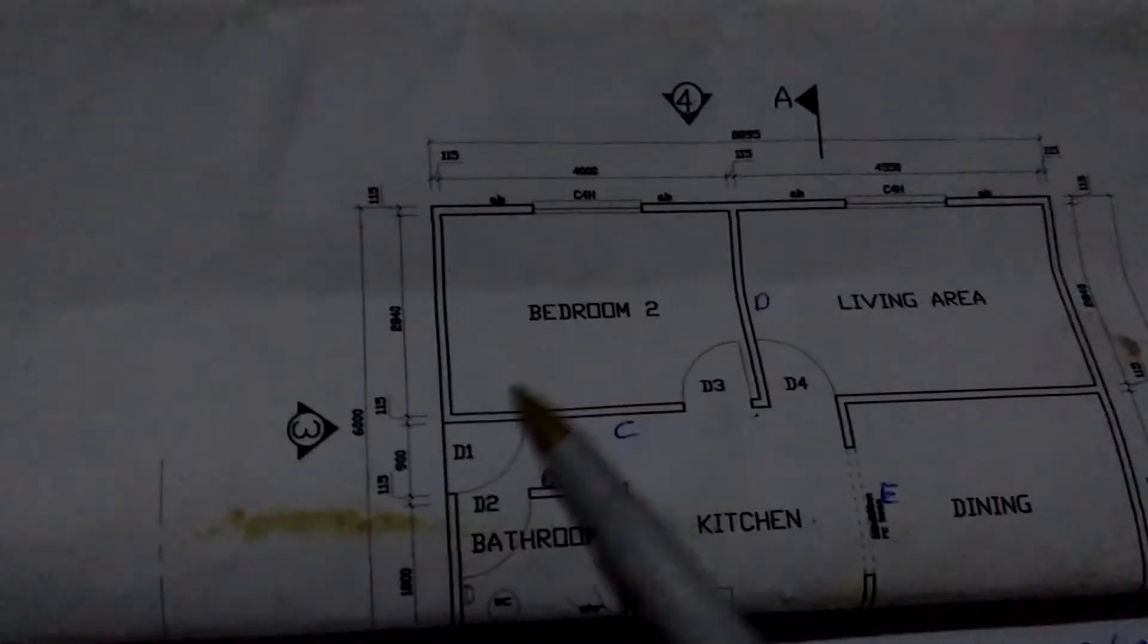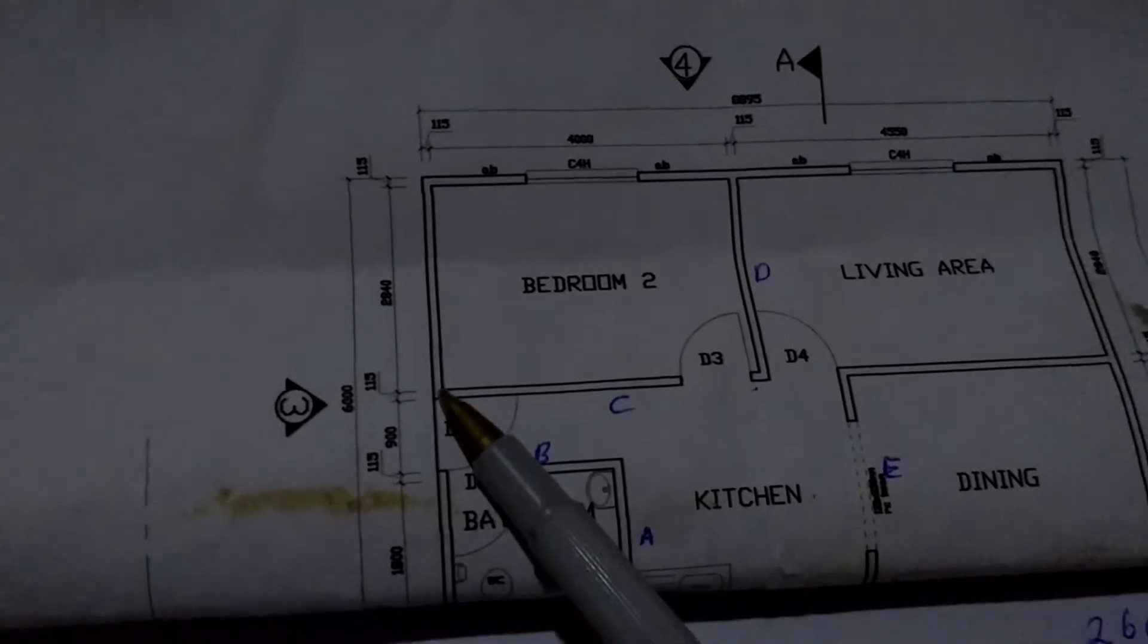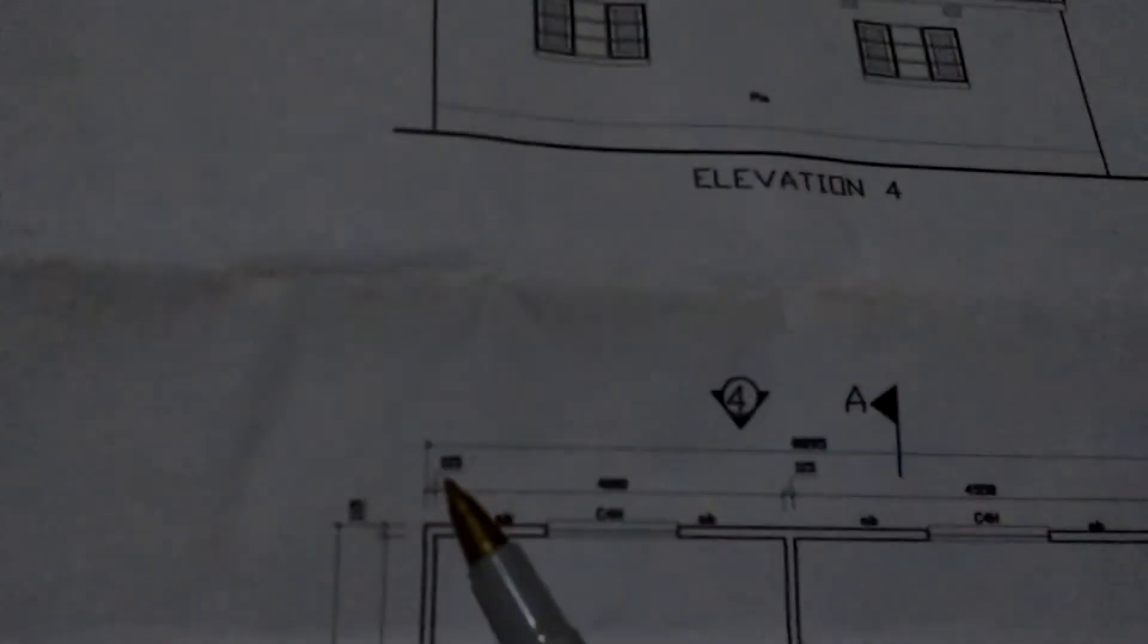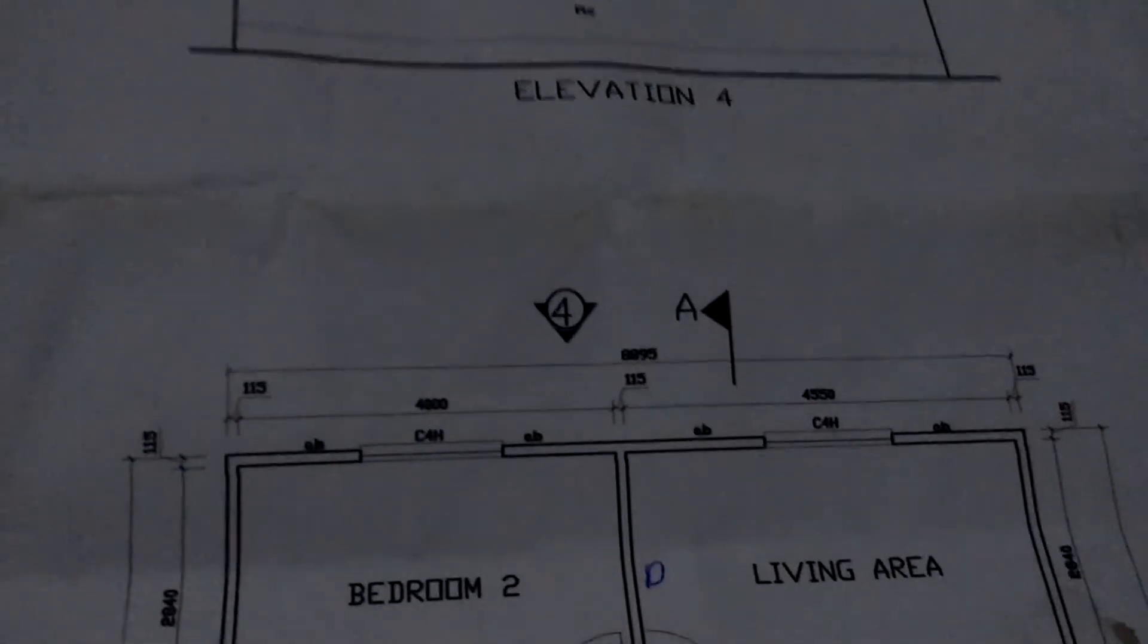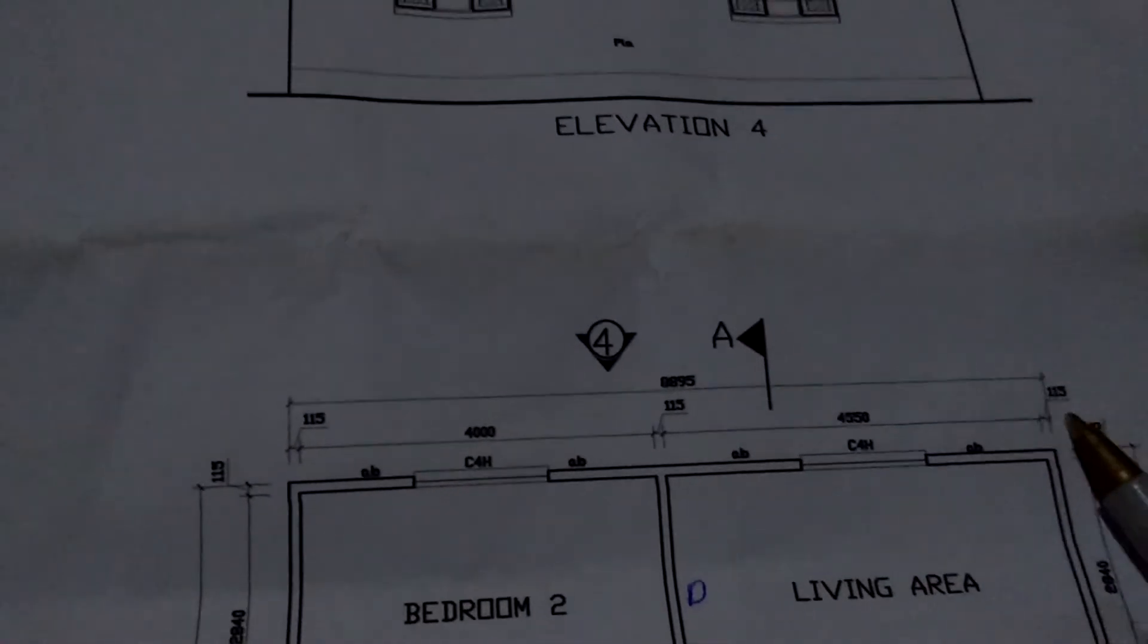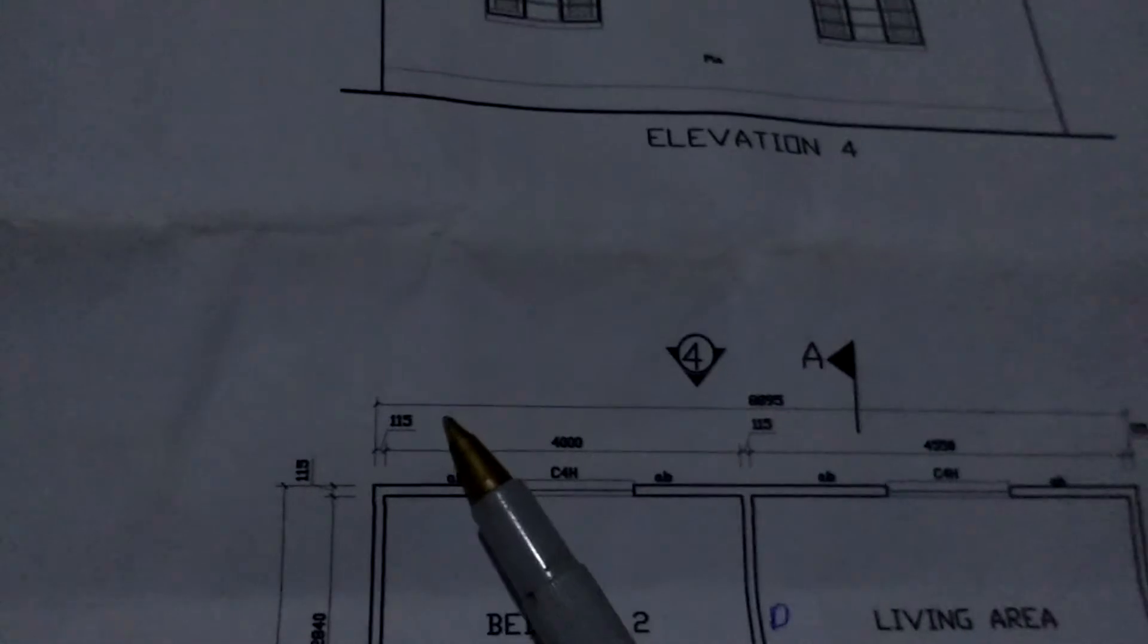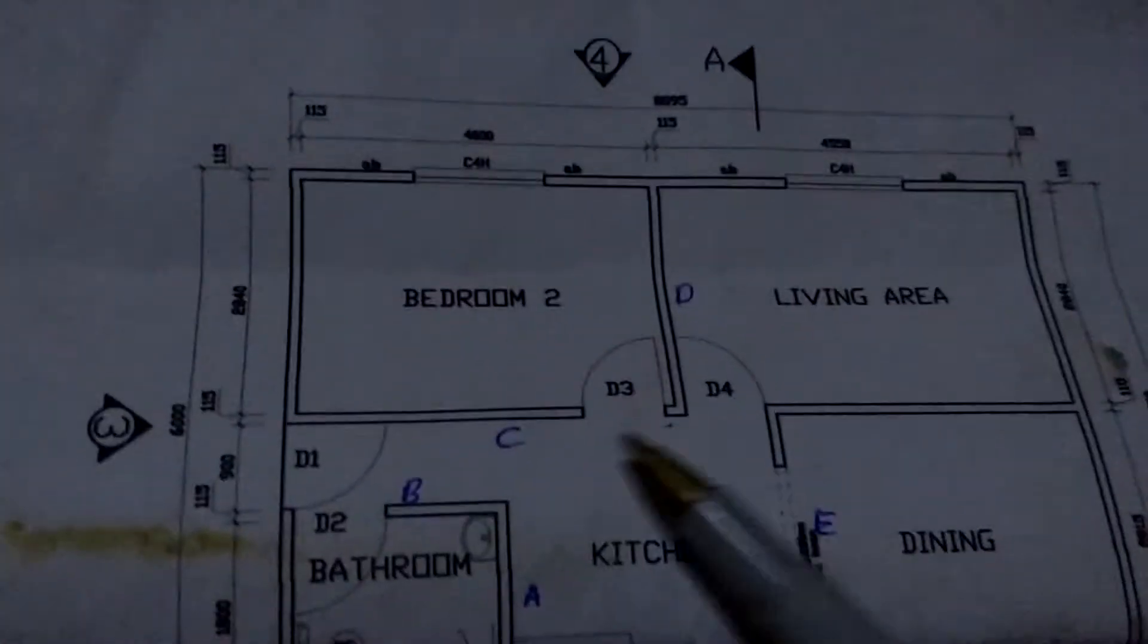We're going to take this wall from here up to this point also. So we're going to say 8,895 deduct 1.5 by 2 since there are 2 1.5s that we have to deduct. Like the one, the other one, the other one is here and the other one is here. So that's wall C.